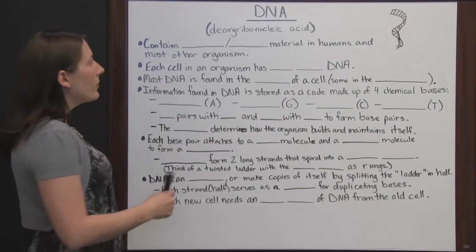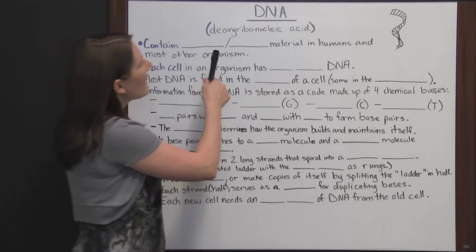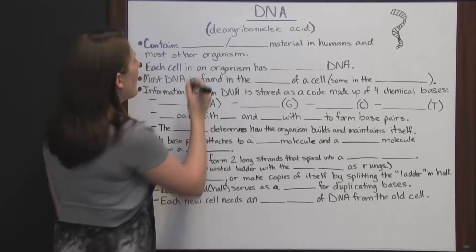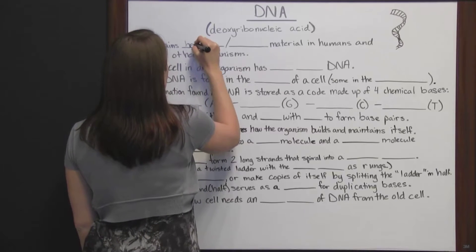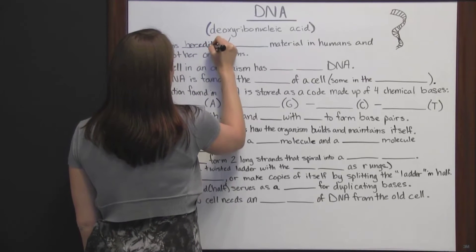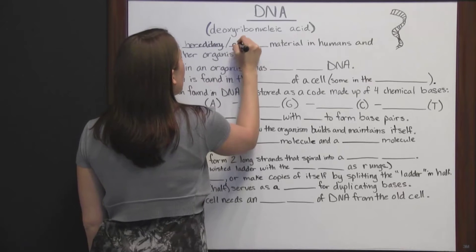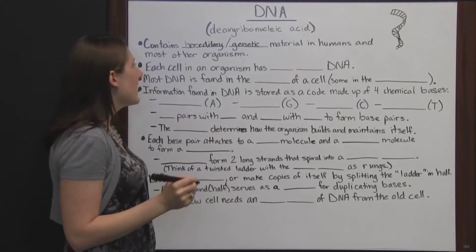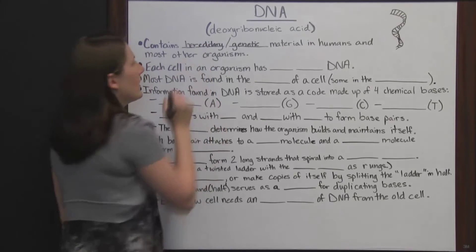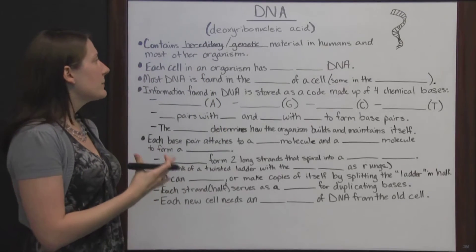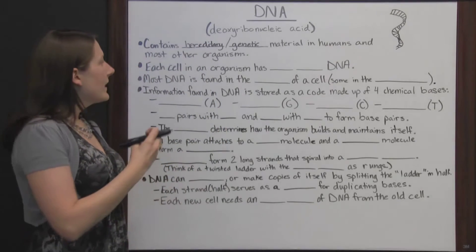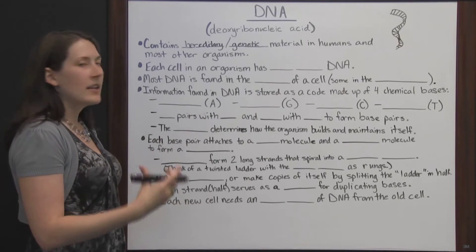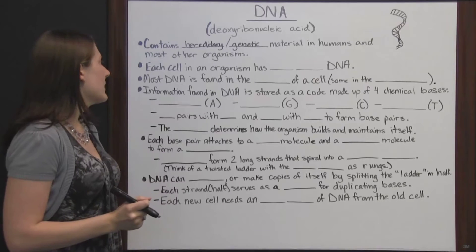DNA, or deoxyribonucleic acid, contains all of the hereditary or genetic material in humans and most other organisms. DNA is what lets people know what genetic material is in a person or in a certain creature or other organism.